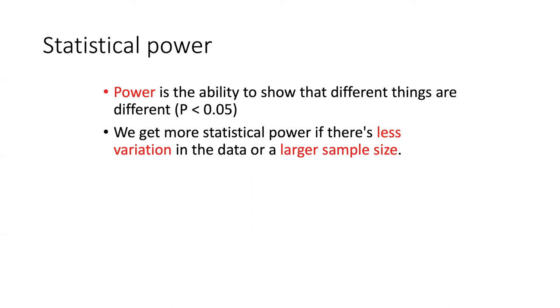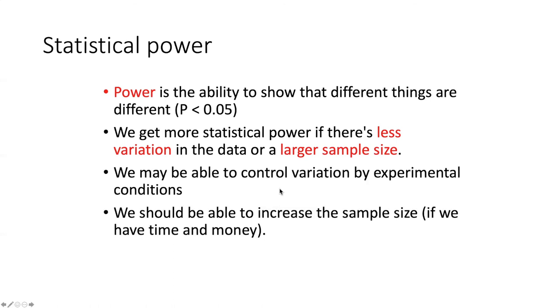Power is the ability of your experiment to show that things that are different really are different. We could control the variation by the experimental conditions. We could increase the sample size if we have more time and money, but that's of course always a limitation. If it turns out that the two things really aren't different that we're comparing, then it doesn't matter how good our experiment is or how much statistical power we have.